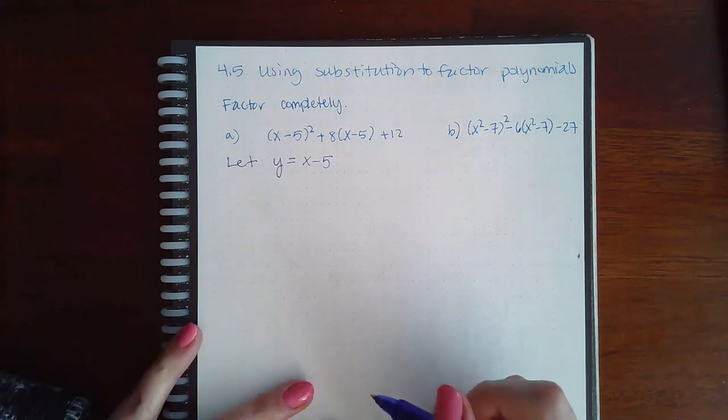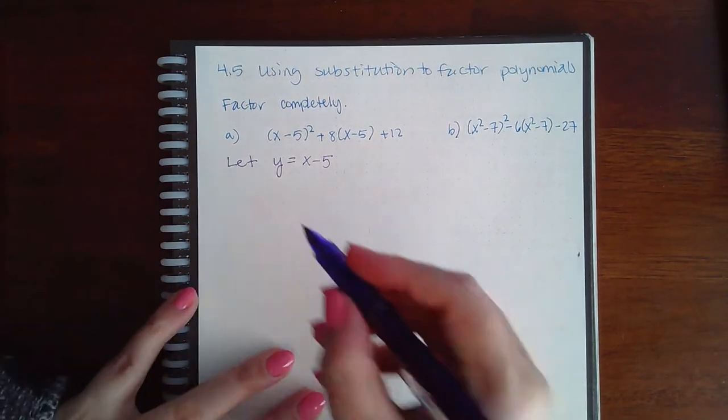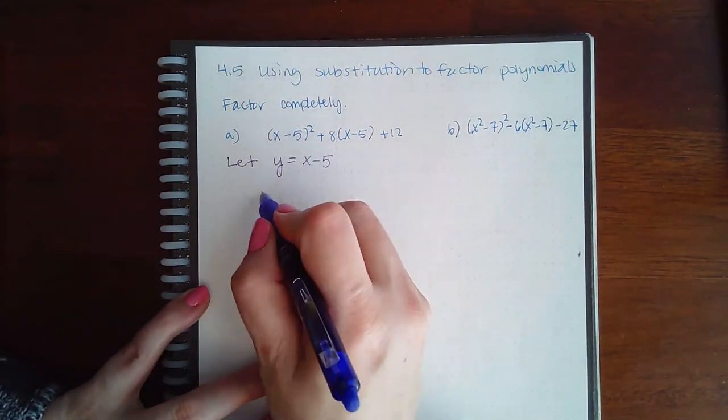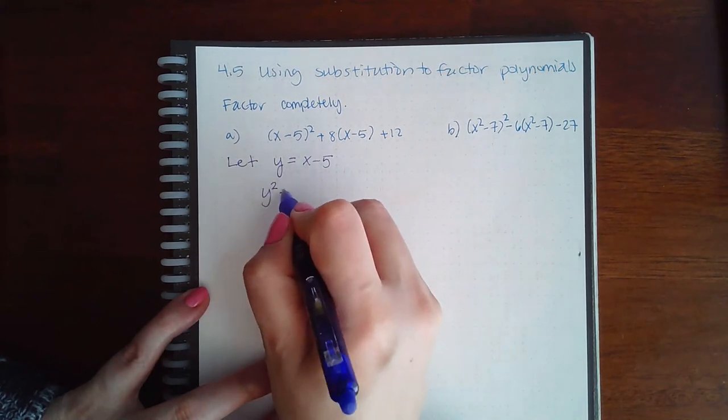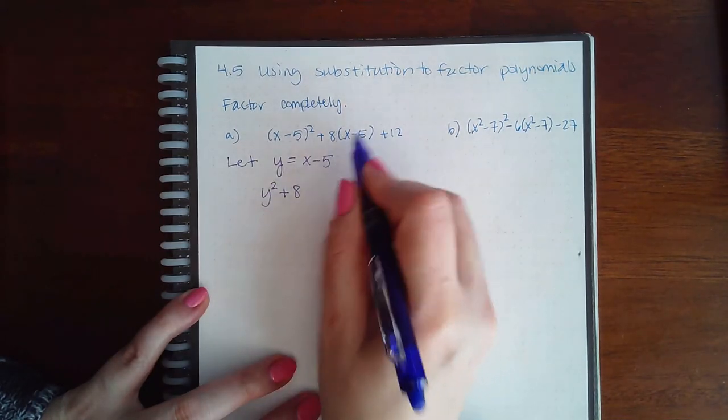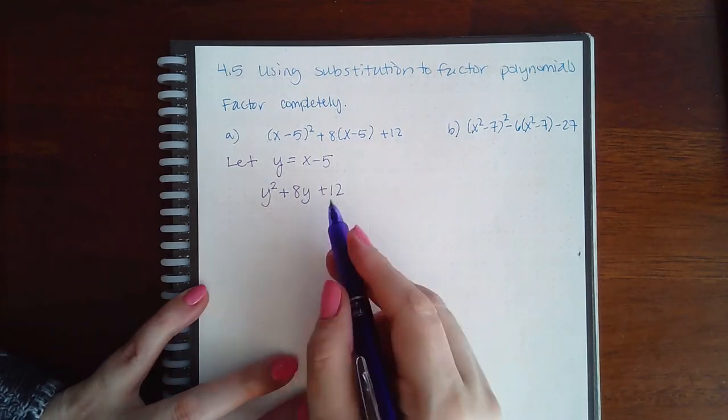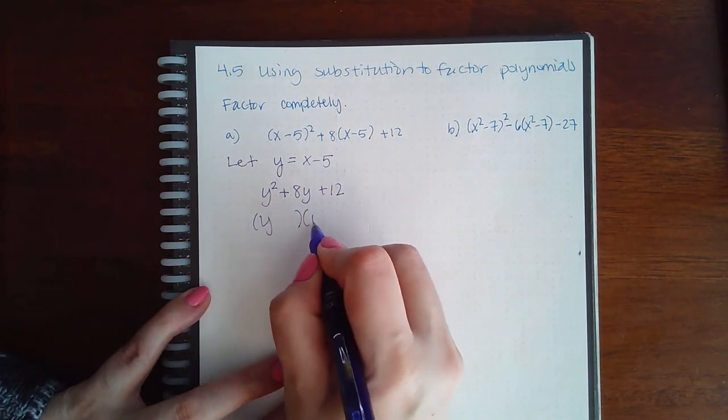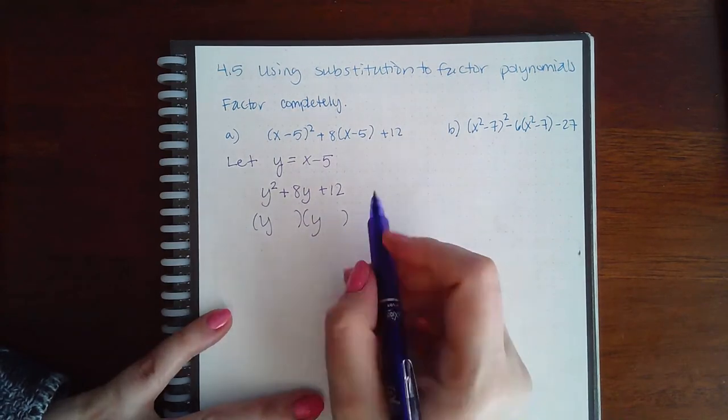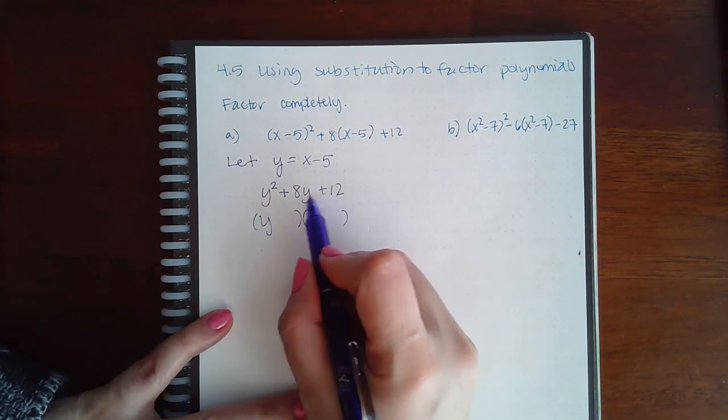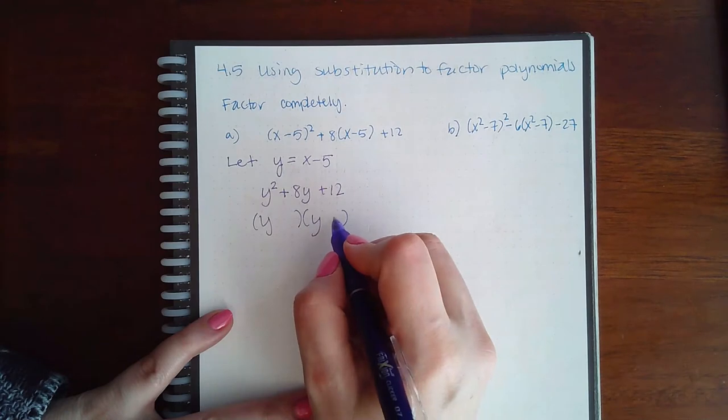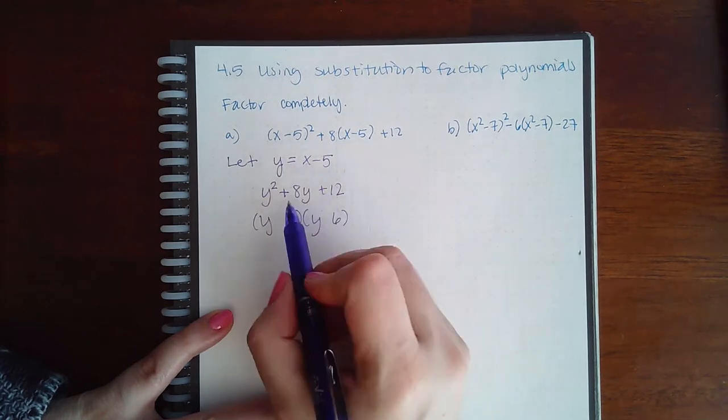Then that means that this would become y squared plus 8 times y plus 12. And this expression I can factor. There's no number in front, so I can just do y times y. And then the factors of 12 that add to give me 8 will be 6 and 2. And since it's a positive 8, these will both have to be positive.